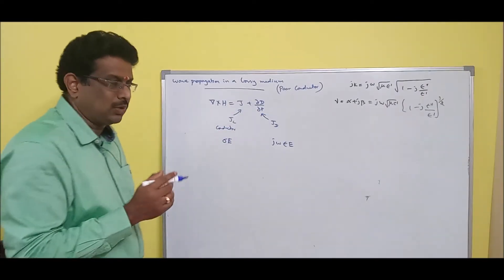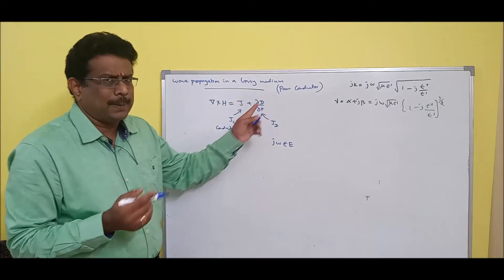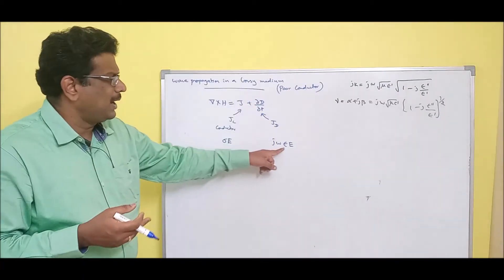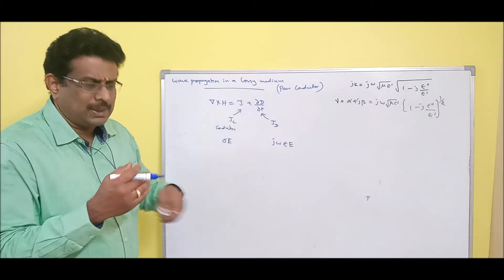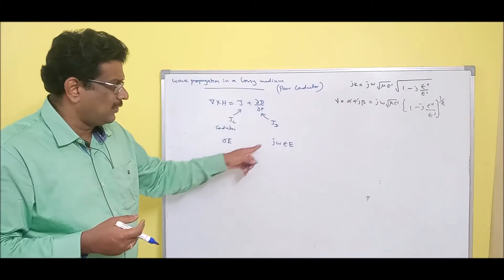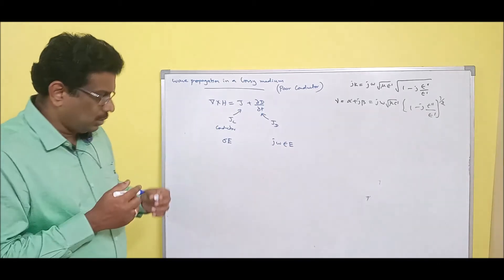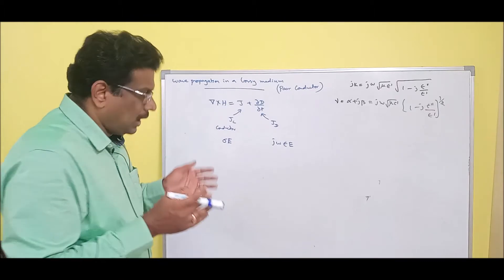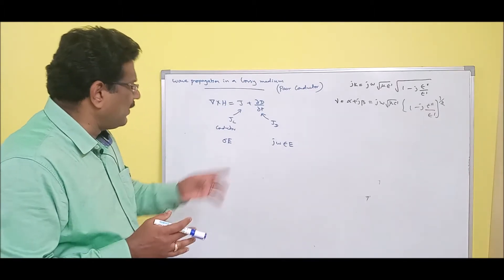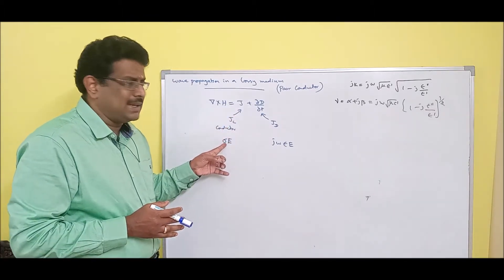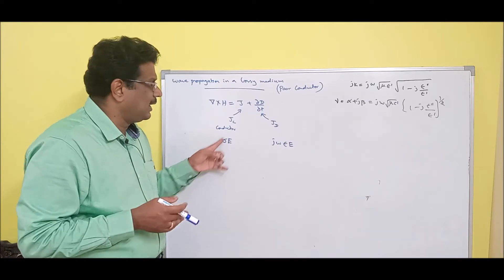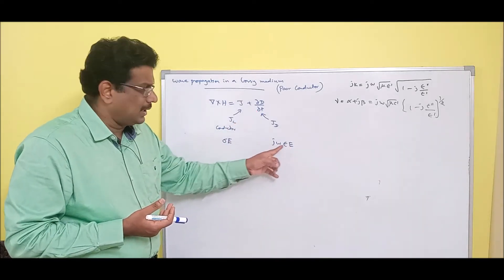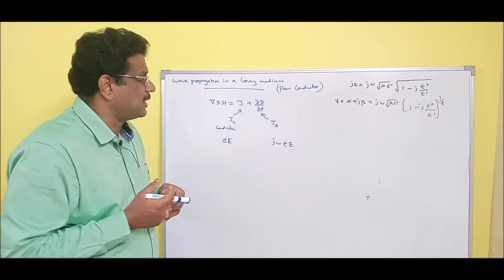This we learned from Maxwell's equation. D is nothing but epsilon*E — in free space epsilon*E, and in any medium epsilon*E. The dou/dt term introduces a phase shift, so we get j*omega. If you have conductivity, sigma*E is responsible. If you have permittivity, j*omega*epsilon*E is responsible.